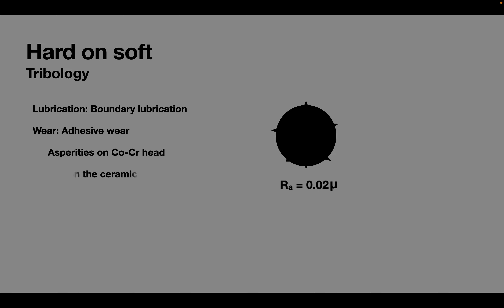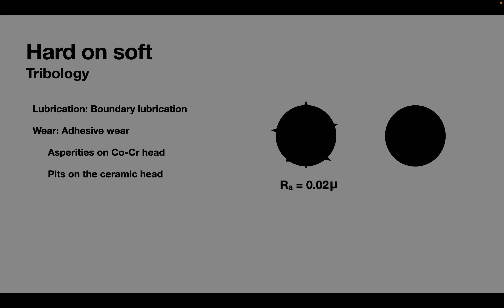The coefficient of friction in ceramic on poly is better than that of metal on poly. Pits on the surface of the ceramic head are responsible for its surface roughness. The RA of these pits is 0.006 microns.